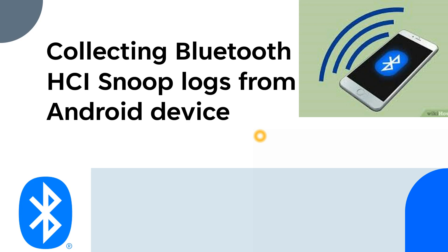So many times you may face Bluetooth issues where when you connect from one device to another device, you may feel that the data is not transferred properly, or you want to know more about what's exactly happening in the background, or you want to solve a Bluetooth error. Bluetooth logs usually won't be part of your normal logs — the main logs, system logs, event logs. So there is a separate part called HCI snoop, and using this HCI snoop we have to collect all the Bluetooth logs.